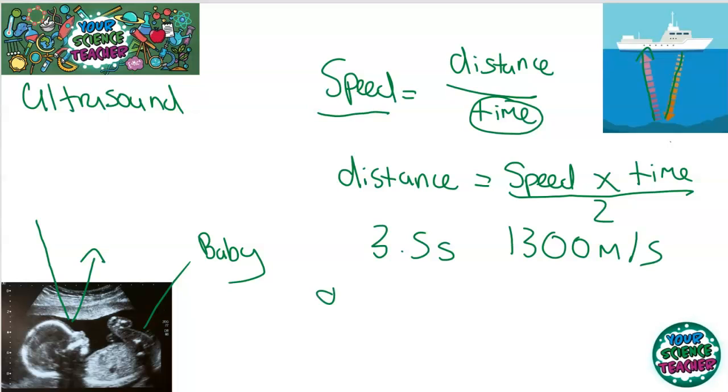You could calculate the depth of the ocean by doing 1,300 times by 3.5 seconds divided by 2 and that equals 2,307.5 and distance is always measured in meters.